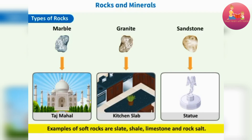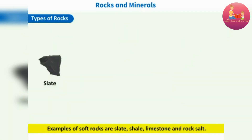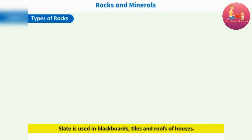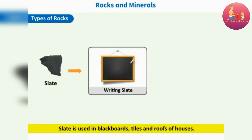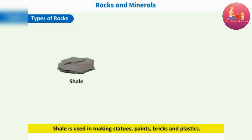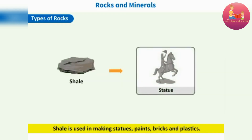Examples of soft rocks are slate, shale, limestone and rock salt. Slate is used in blackboards, tiles and roofs of houses. Shale is used in making statues, paints, bricks and plastics.